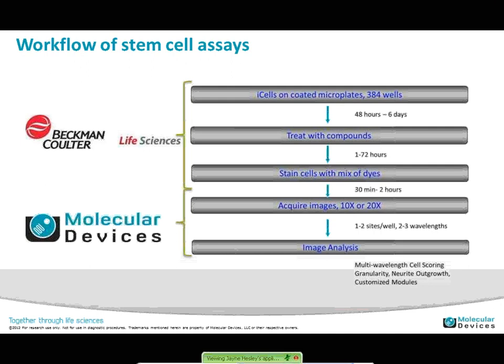A quick review of the workflow: as Beckman showed, you can use their Biomek systems for pre-coating microplates, seeding cells onto microplates, treating with compounds, and staining cells with dyes and performing wash steps. From beginning to end with these cardiomyocytes, the assay is about a week. Part of that is cells need to grow for three to seven days before use so you can see contraction. We would then acquire images at 10x or 20x using the ImageExpress Micro and analyze those images using MetaXpress software and its modules.